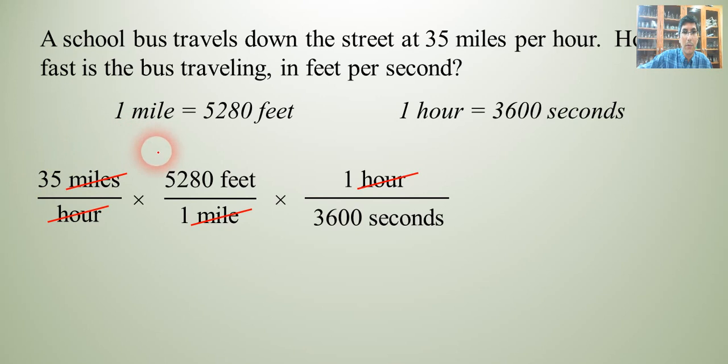And now we can do our multiplication and division. So 35 times 5,280 divided by 3,600. So our answer is in feet per second, as we see here. And the number that we get when we calculate that is very close to 51.3. So that's how we can solve some simple dimensional analysis problems here, 51.3 feet per second.